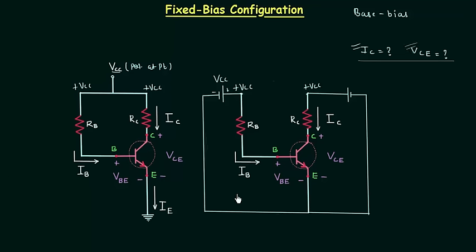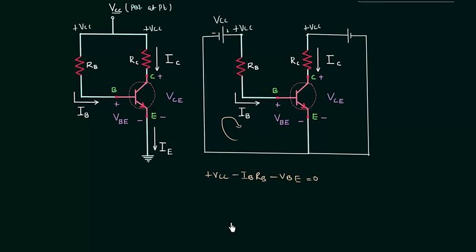I will apply KVL in the input loop. We have: plus Vcc minus Ib·Rb minus Vbe equal to 0. From this equation we can easily calculate the base current. So Ib is equal to (Vcc minus Vbe) divided by Rb. This is the value of base current.